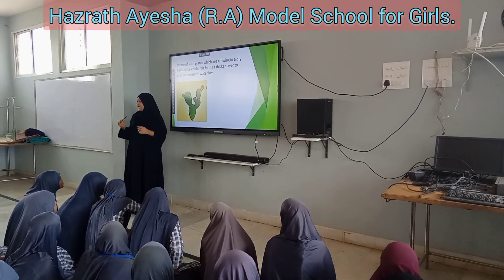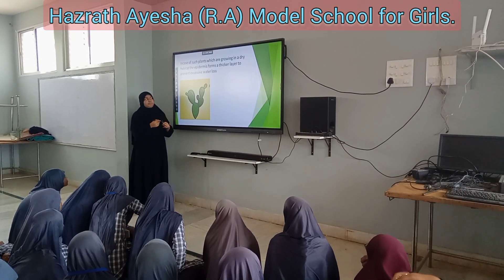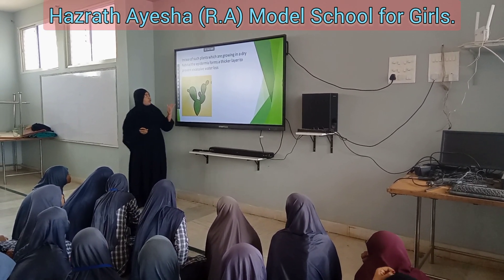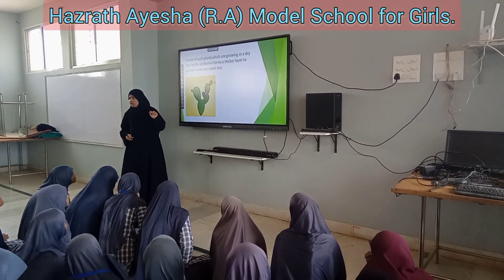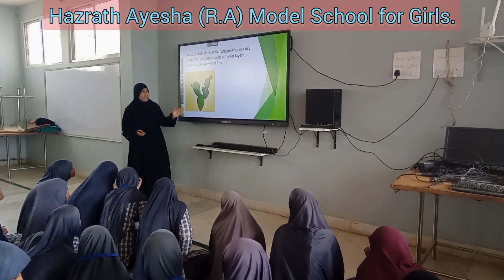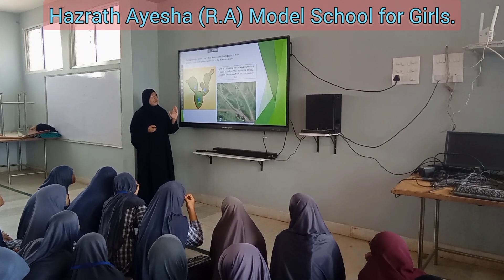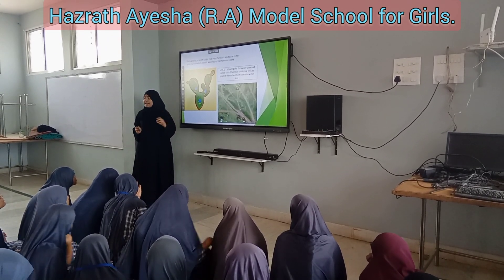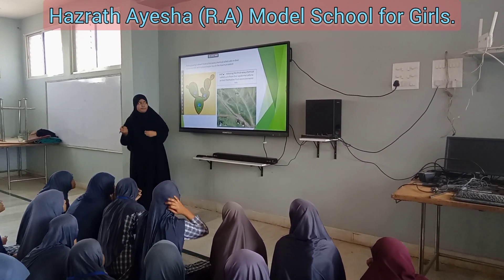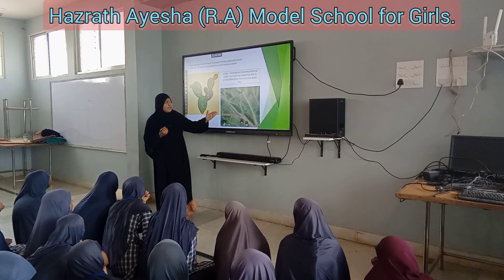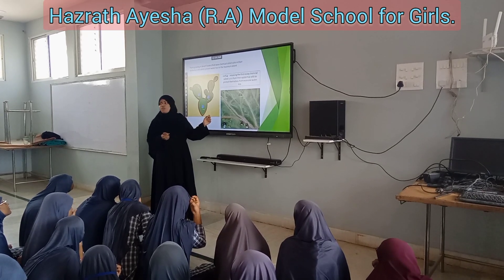What about the plants which are growing in dry habitats? They need water most. In the case of such plants growing in dry habitats, the Epidermis forms a thicker layer to prevent excessive water loss. You can see here it is a desert plant and it has a thicker epidermal layer. The plants growing in desert have a thick waxy chemical called cutin in their epidermal cells which prevents water loss to the maximum extent.